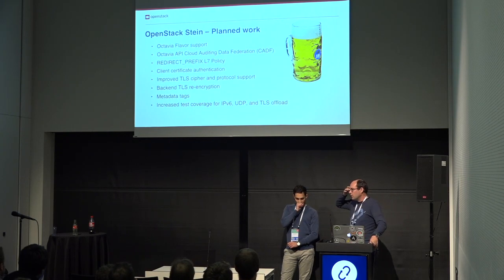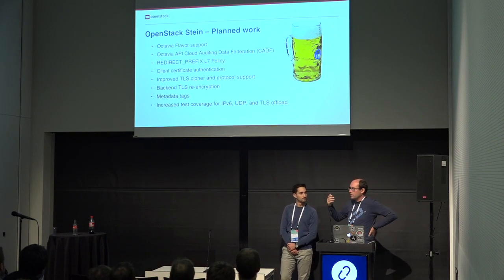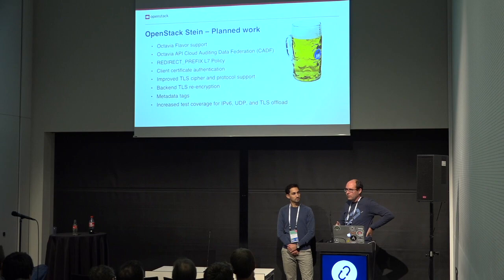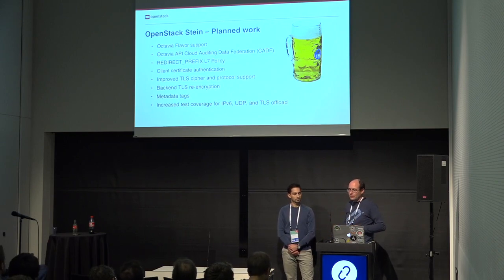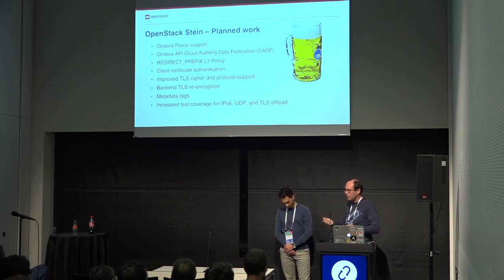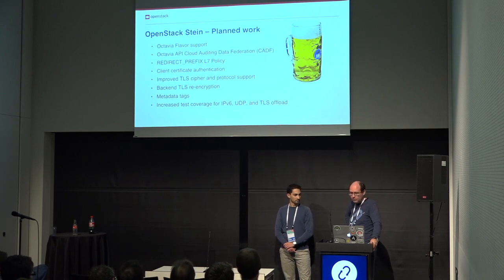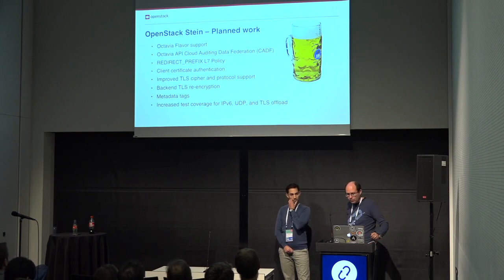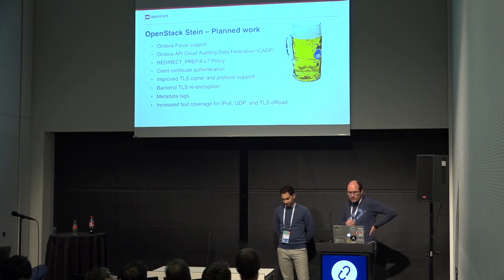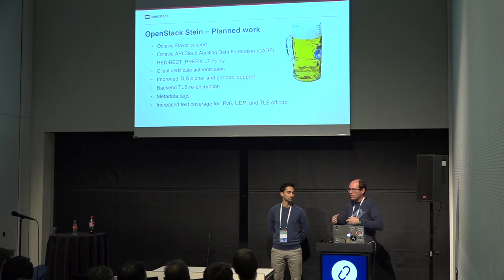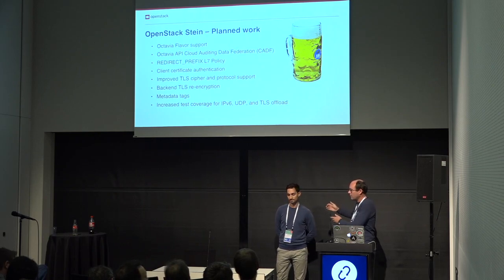We want to add client certificate authentication. Right now with our SSL offloading support, we don't look at the client certificate — anybody can access those sites securely. But we want to add that so we can cross-reference that the client has a valid certificate, and only authorized users with the right client certificate can reach the SSL-protected pages. We also want improved TLS cipher and protocol support with newer, more secure options. Another big feature is backend TLS re-encryption: traffic comes in with TLS, we terminate it on the load balancer, inspect the headers, and then re-encrypt it — potentially with a different certificate — and send it back as TLS to the backends.